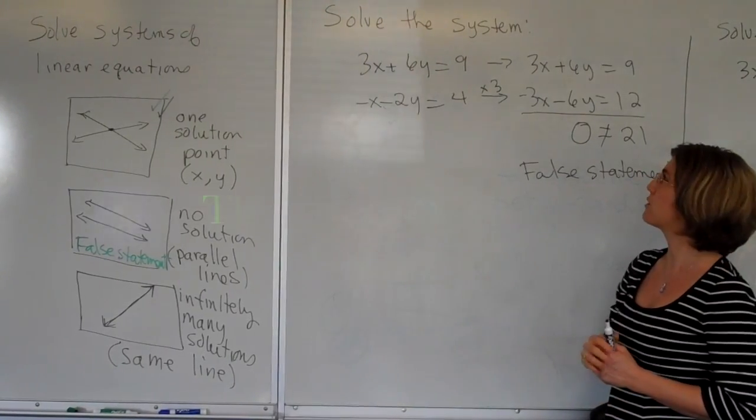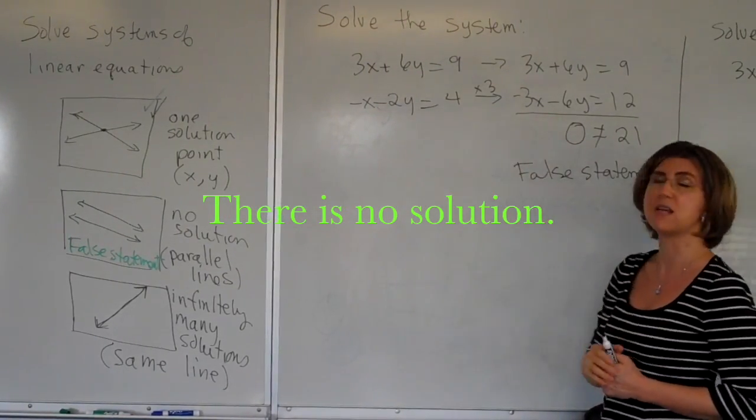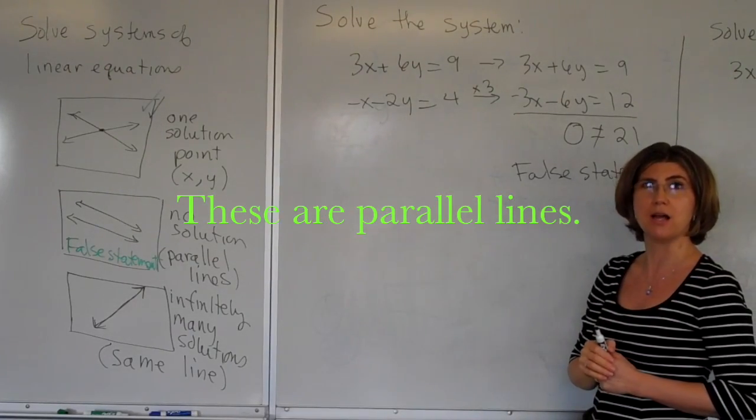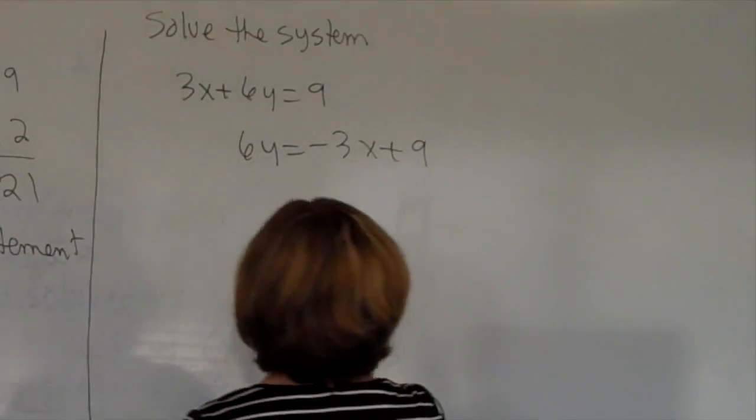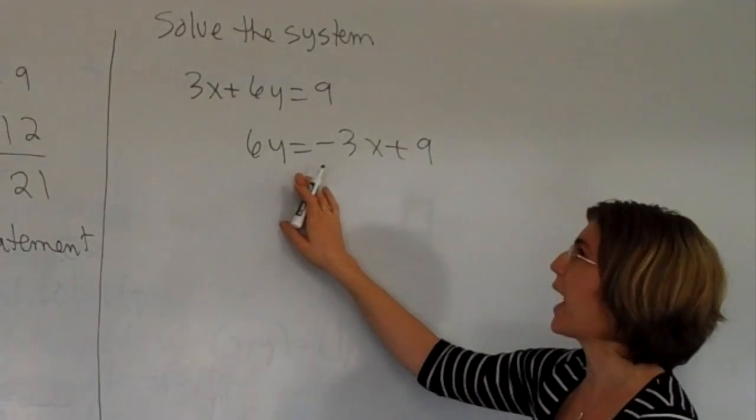So this is a situation where we have no solution. If we were to graph these two lines, they would look like parallel lines. So let's look at the other situation. We have infinitely many solutions. Well, that's the situation we have here.